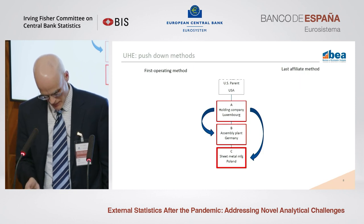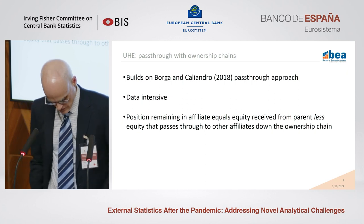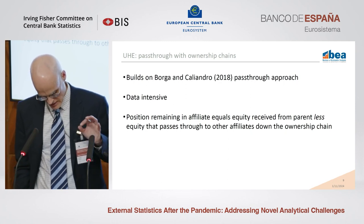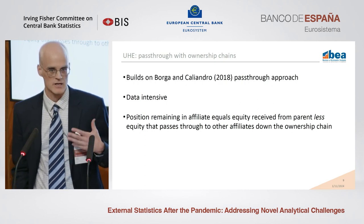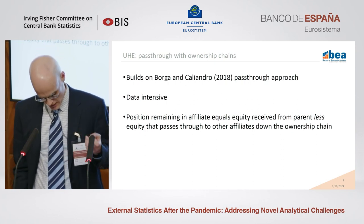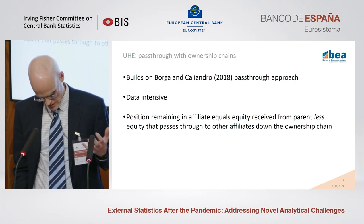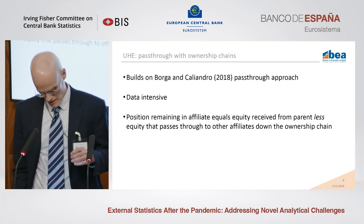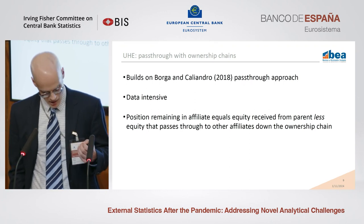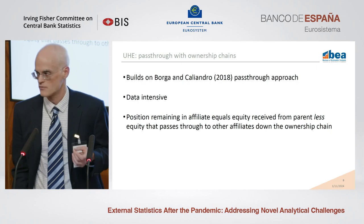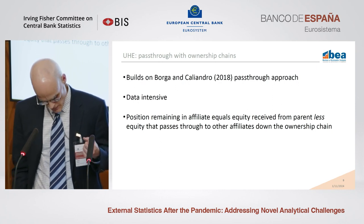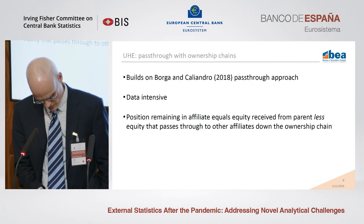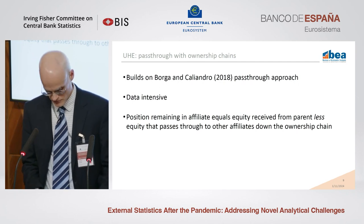The pass-through-with-ownership-chains method doesn't ignore any affiliates in the ownership chain, but rather reallocates the position to each affiliate along the chain. This method may be more conceptually pure, since it calculates the position for each affiliate in the ownership structure. However, it is highly data-intensive, requiring the data compiler not only to know the structure of the multinational but to have detailed financial information about each entity in the chain. BEA is fortunate to have this information from our annual and benchmark surveys, but even so, applying this method turns out to be quite challenging.